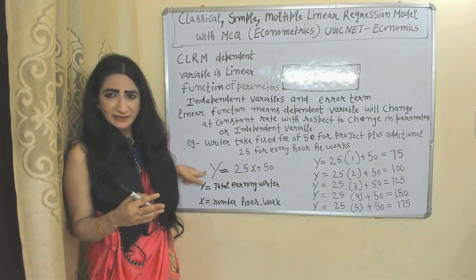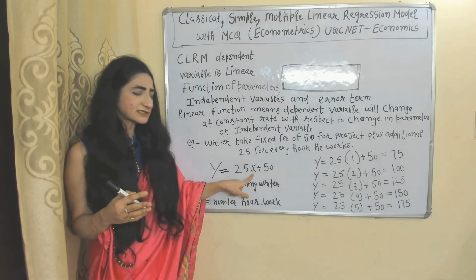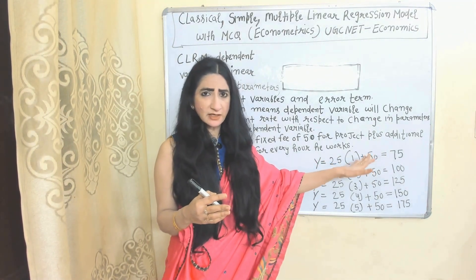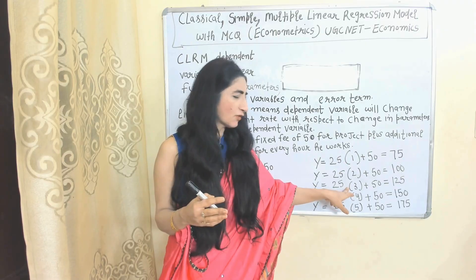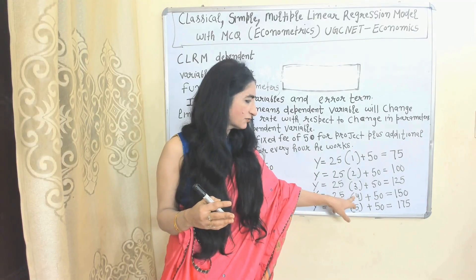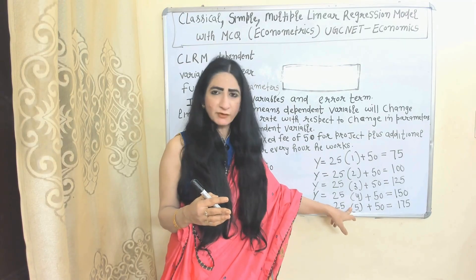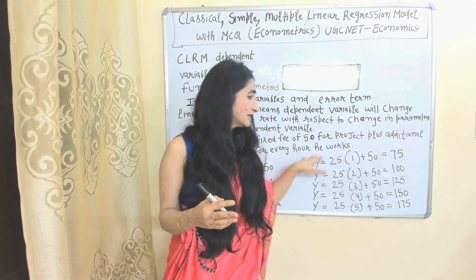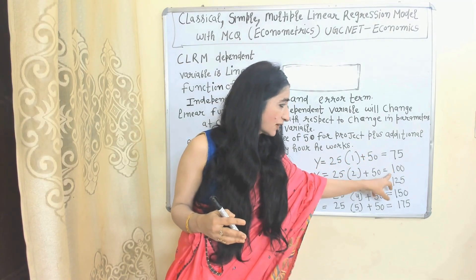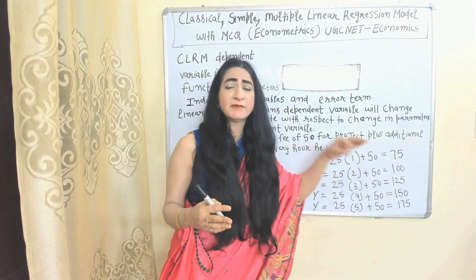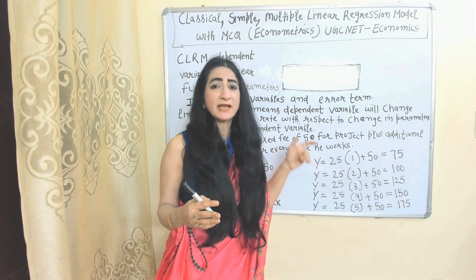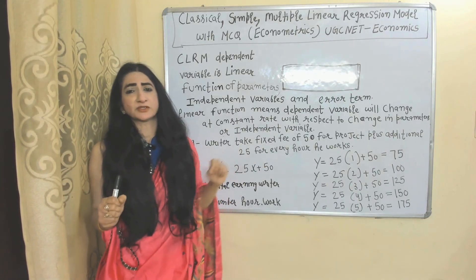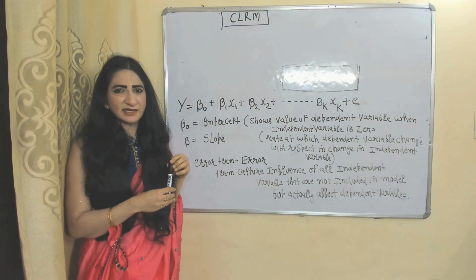For example, Y is the dependent variable representing total earnings of a writer, and X is the independent variable representing number of hours the writer works. If a writer works 1 hour, total earning is 75; 2 hours, 100; 3 hours, 125; 4 hours, 150; 5 hours, 175 rupees. Every time the dependent variable increases by 25 rupees, showing it changes at a constant rate — a linear function of the independent variable.